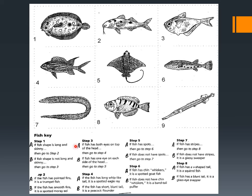Step three, choice A: if the fish has both eyes on top of the head — yes, I think both eyes are on top of the head. The other option is if one eye is on each side of the head — no, I think they're both on top. So we go to step four. First choice: if the fish has a long whip-like tail — I think probably so. Choice B is if the fish has a short blunt tail. This is definitely a long whip-like tail, so it is a spotted eagle ray. We got it keyed out.